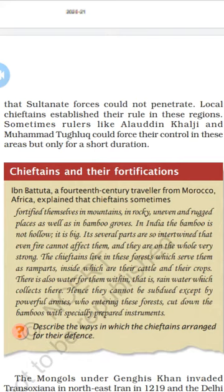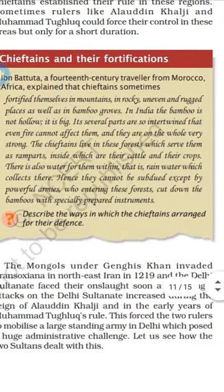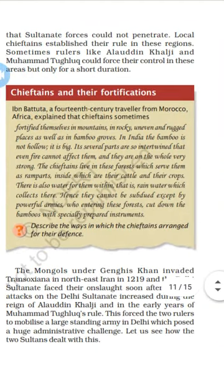During the same period, Allahuddin Khilji as well as Muhammad Tughlaq were able to force their control over these areas, but only for a short duration. The Mongols also entered our country. The great king of the Mongols was Genghis Khan, who invaded from Iran in the north and east in 1219, and the Delhi Sultanate was forced to respond.